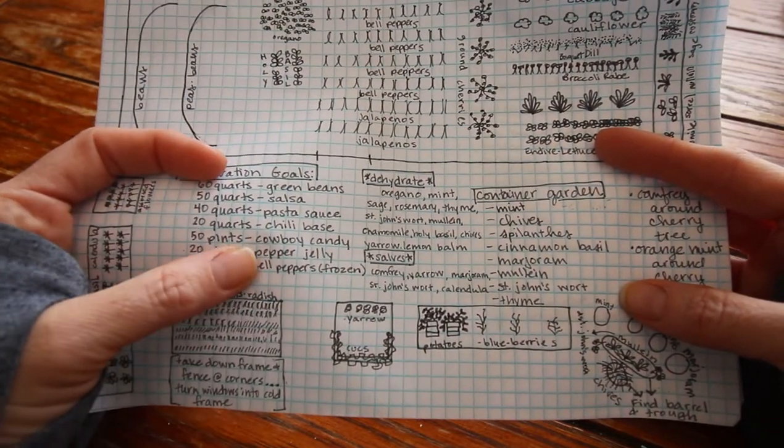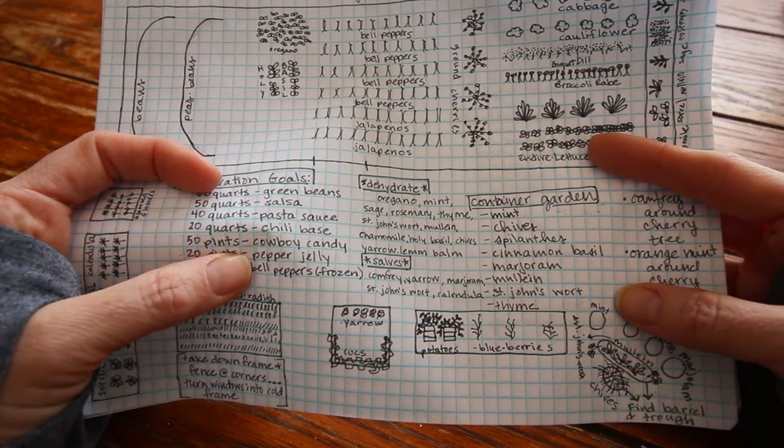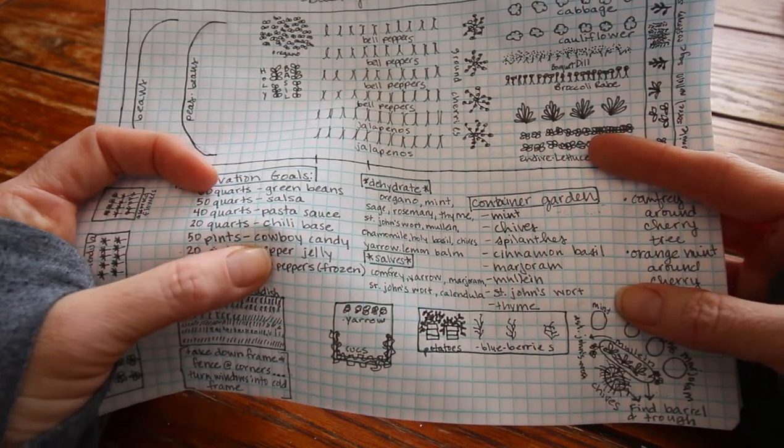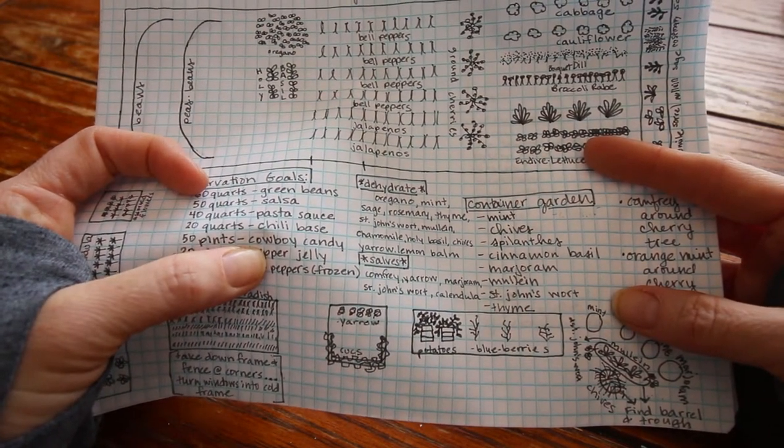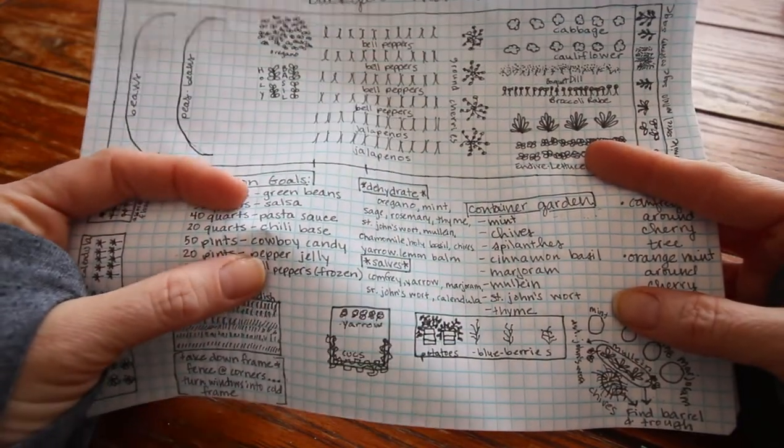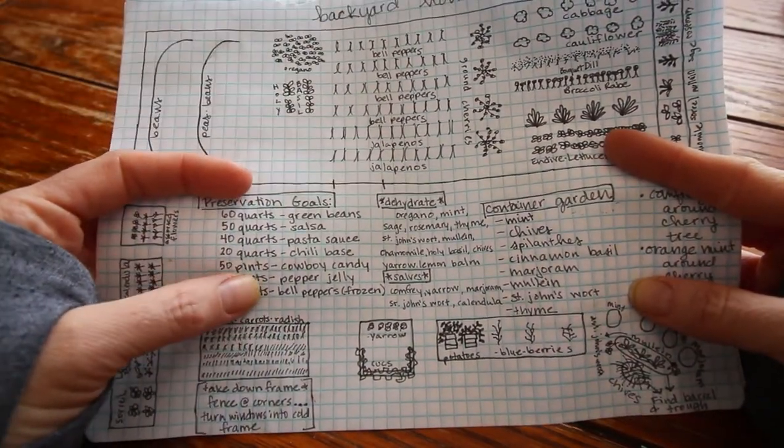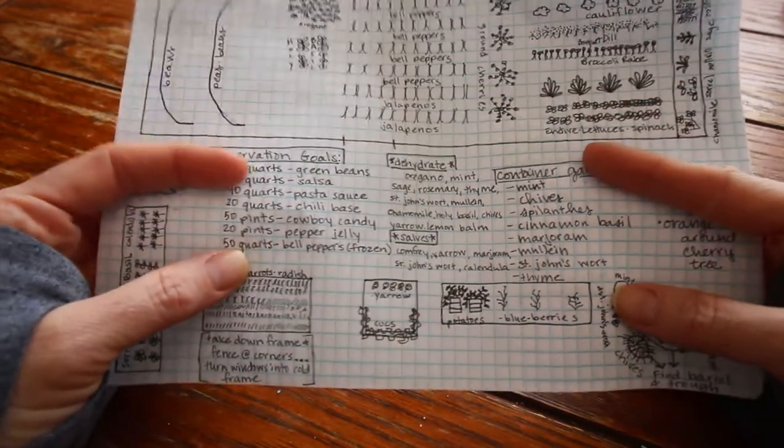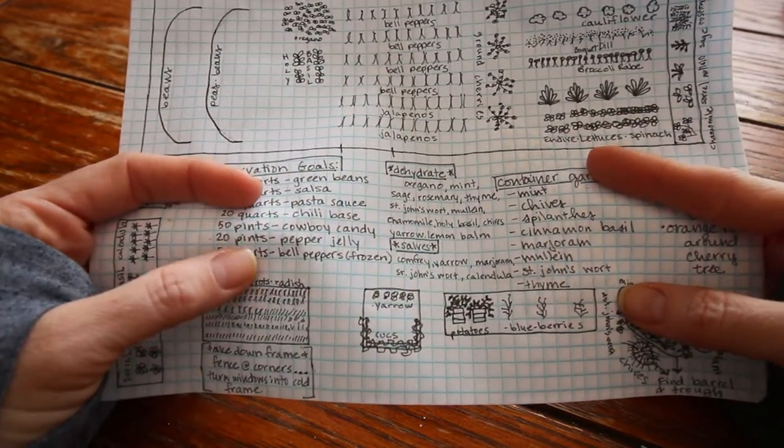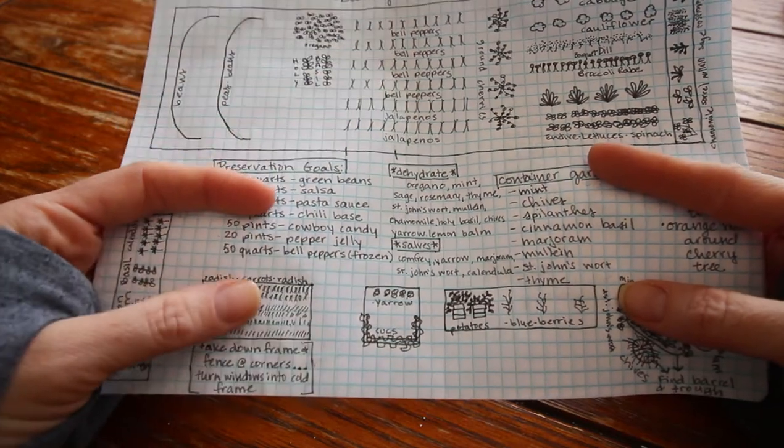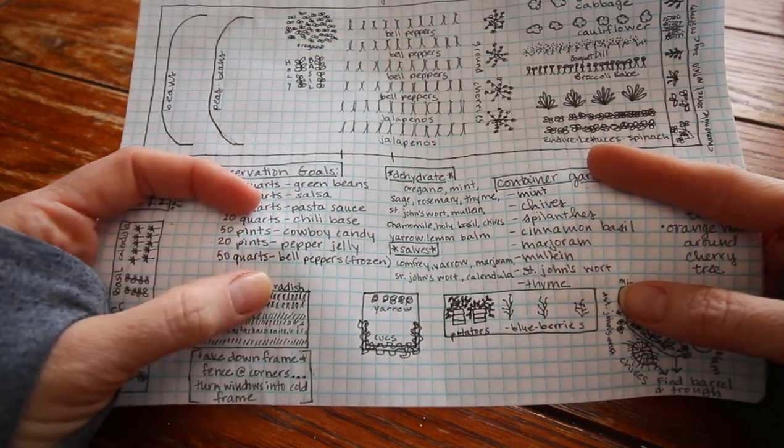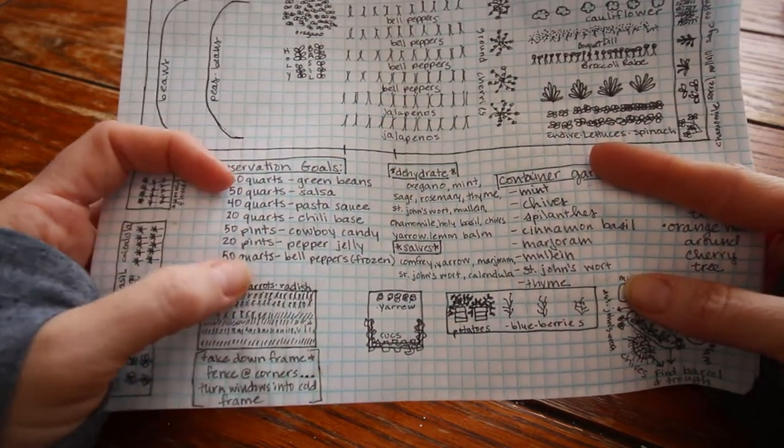50 pints of cowboy candy. We love this stuff, it's really good on cream cheese on a cracker, it's so good especially in the winter when it's really cold. It's also really good as a marinade too if you like spicy dishes.